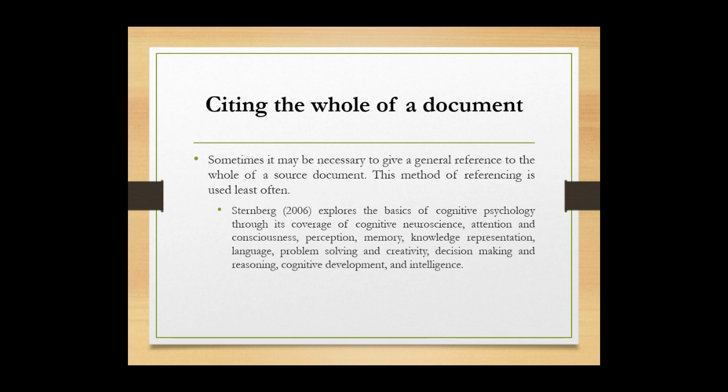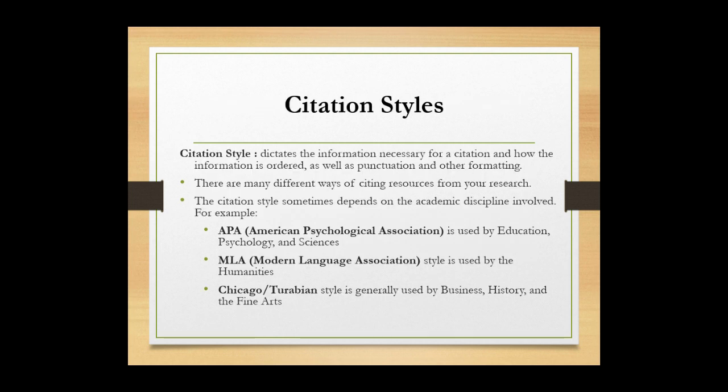Sometimes it may be necessary to give a general reference to the whole source document. This method of reference is used least often. For example, Steinberg (2006) explores the basics of cognitive psychology through its coverage of cognitive neuroscience. So you explain the document you have read in full, but that explanation is summarized into a short paragraph. That is what we call citing the whole document.